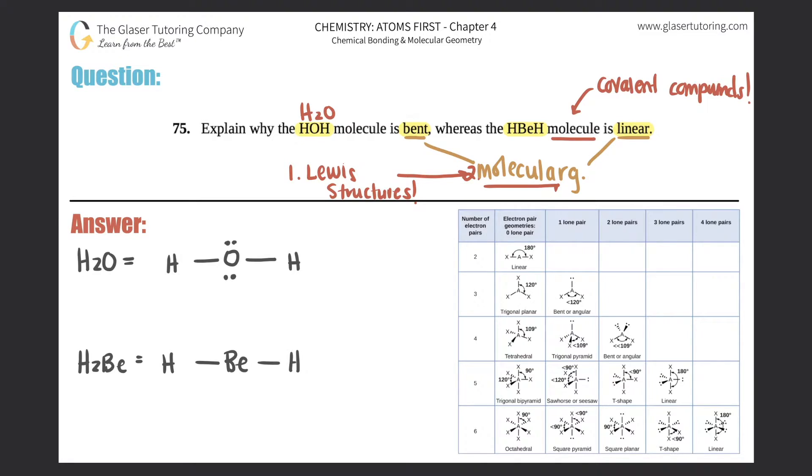The difference has to come from the lone pairs. Now the first thing is we drew the Lewis structure. Now we go to molecular geometry—that's knowing how to use this chart right here. I would first memorize this chart. The way that you memorize it is you want to try to group the ones that go together, and they go horizontally. So trigonal planar and bent go together, tetrahedral trigonal pyramidal and bent go together, and trigonal bipyramidal seesaw T-shaped and linear go together.